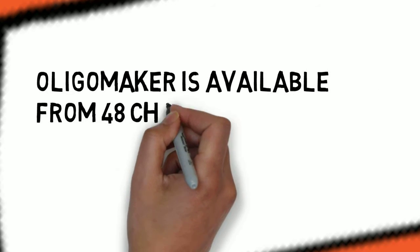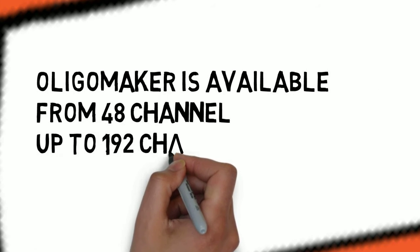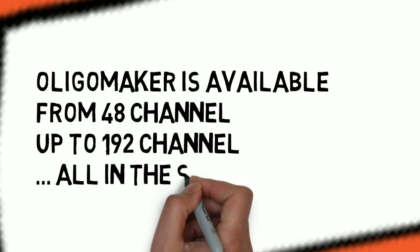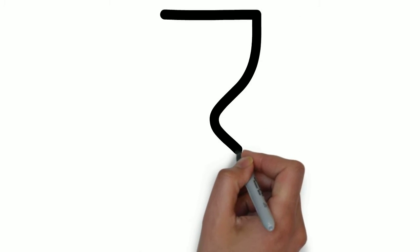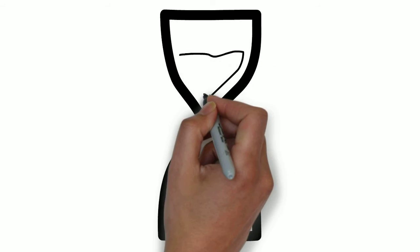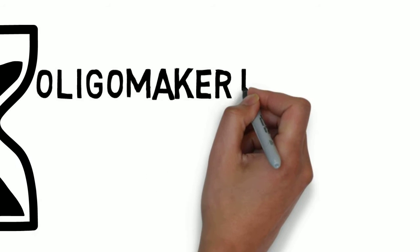OligoMega is available in sizes from 48 channel, 96 channel and up to 192 channel. All in the same synthesizer. When it comes to speed, OligoMega is fast.